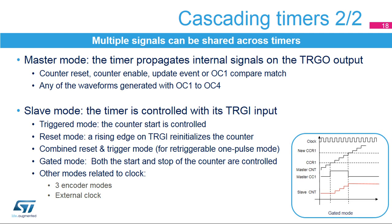This slide lists the various operating modes and the signals exchanged between timers. In master mode, eight options are given for selecting the trigger to be sent on the TRGO output. The output can be a single synchronization pulse issued upon counter-reset, counter-enable which corresponds to counter-start, the update event, or the compare-one match event.